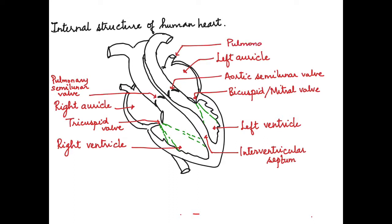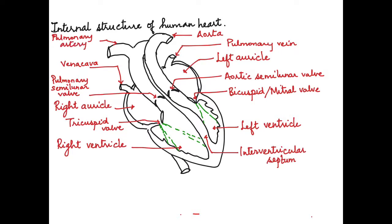Next we label the blood vessels. The vessel that receives blood from the lungs is the pulmonary vein — pulmonary veins come from both right and left, but here shown as a single structure. The vena cava is on the right side. The vessel that carries blood out of the heart from the left side is the aorta, and the vessel carrying blood from the right side is the pulmonary artery. The vessel on the lower side is the inferior vena cava, which collects deoxygenated blood from the lower parts of the body and brings it to the right auricle.